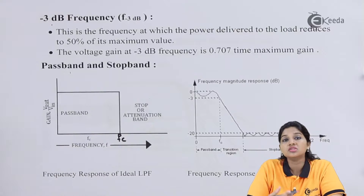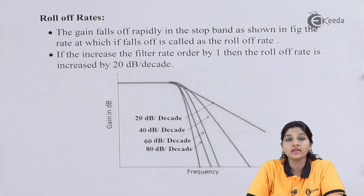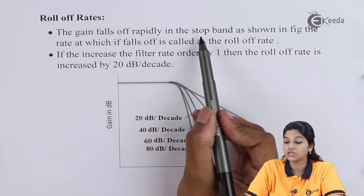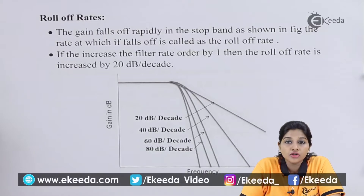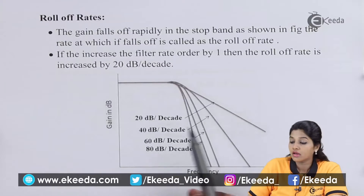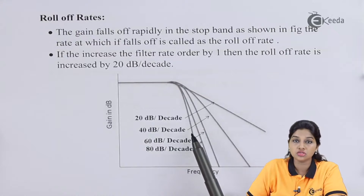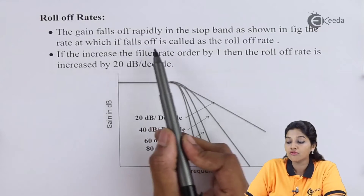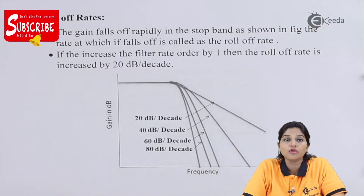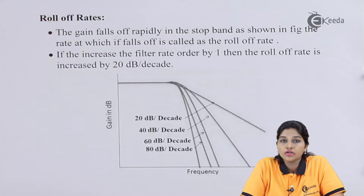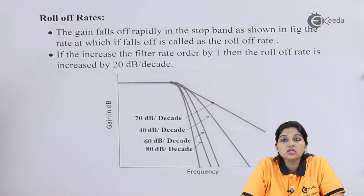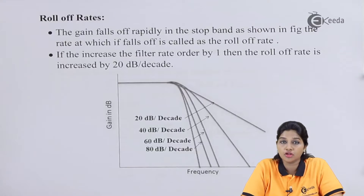The next characteristic is roll-off rate, defined as the rate at which gain falls off rapidly in the stop band. When we look at the filter frequency response, the gain reduces increasingly past the cutoff. The rate at which gain falls is called the roll-off rate. Roll-off rate depends on the order of the filter — as the order increases, the roll-off rate also increases. Increasing roll-off rate increases circuit complexity but provides a very sharp frequency response.